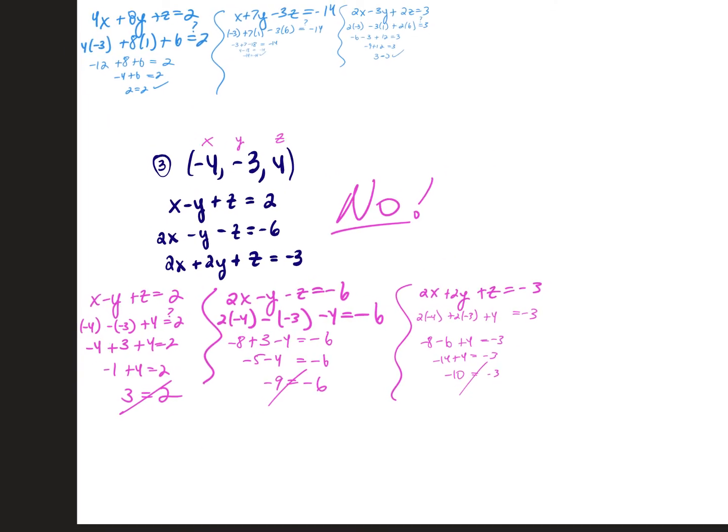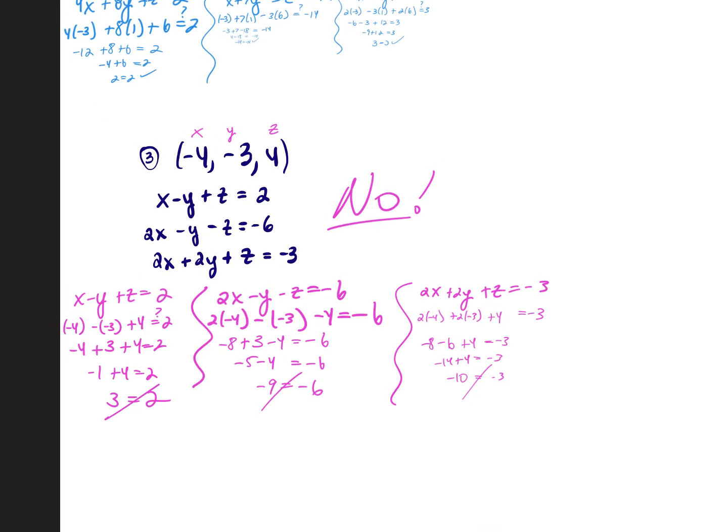Your homework tonight — which I'll go over tomorrow in its entirety — has two different types of questions. You have questions written in row echelon stair-step form where you use back substitution and write the ordered triple. And then you have some where you practice determining if a given ordered triple is a solution by plugging into all three equations and answering yes or no.